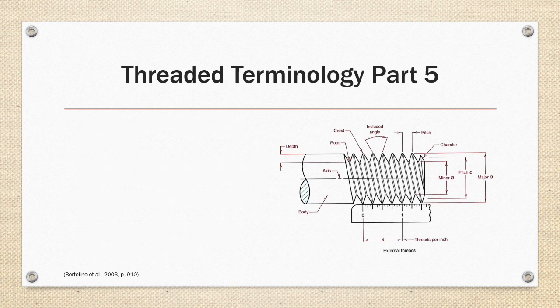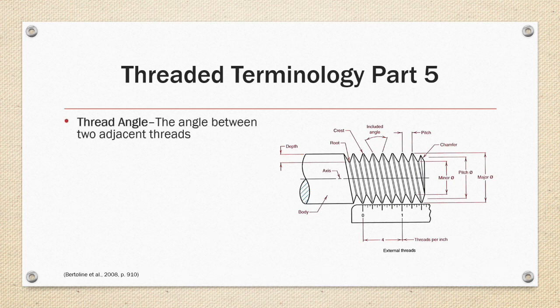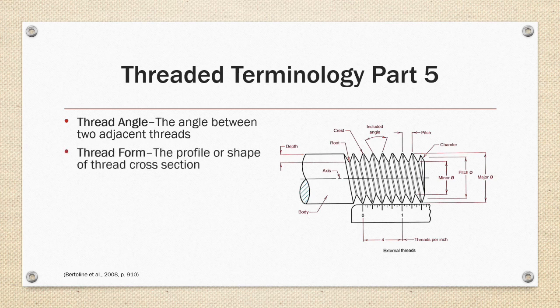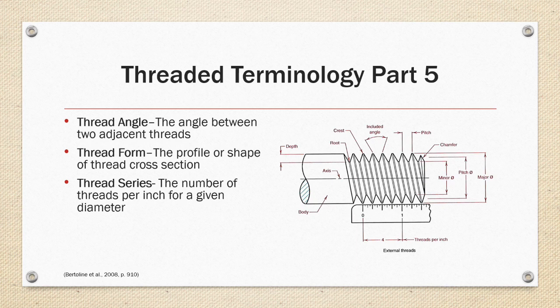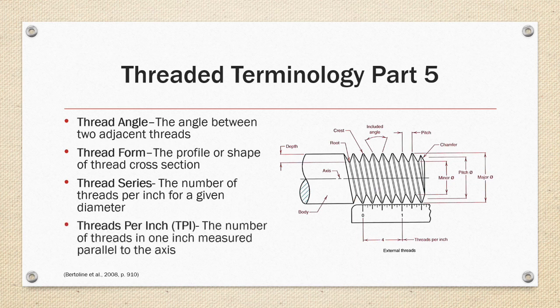Threaded terminology part five. Thread angle, the angle between two adjacent threads. Thread form is the profile or shape of the thread cross section. Thread series is the number given of threads per inch for a given diameter. And threads per inch or TPI is the number of threads in one inch measured parallel to the axis of the thread in the English system.